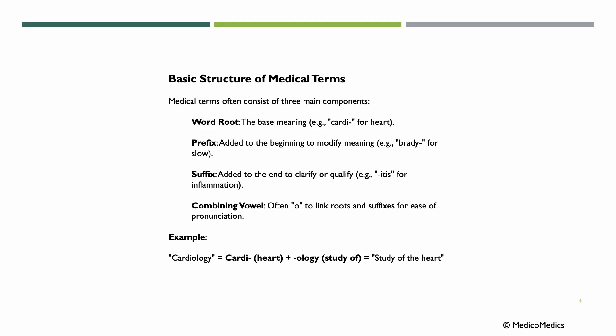Let's look at the basic structure of medical terms. Medical terms often consist of three main components. We have the word root, which is the base meaning — for example, cardi, which means heart. Then we have the prefix, which is added to the beginning to modify the meaning — for example, brady, meaning slow. We then have suffixes, which are added to the end to clarify or qualify — for example, itis, which stands for inflammation.